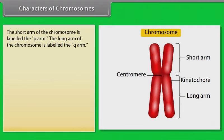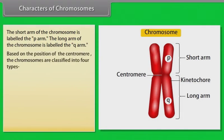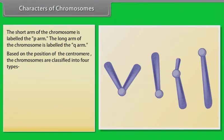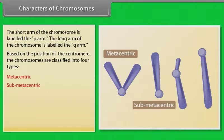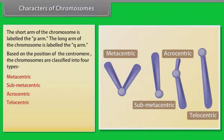The short arm of the chromosome is labeled the P-arm and the long arm is labeled the Q-arm. Based on the position of the centromere, chromosomes are classified into four types: metacentric, sub-metacentric, acrocentric, and telocentric.